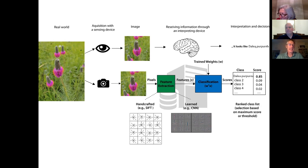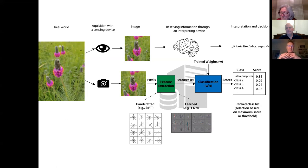Once you've taken the photo, the model does its best to determine what the species is. The model takes as input all the pixels from the photograph, and on the output side produces a classification — a list of species it knows about and the confidence in how well the photo matches each species, ordered from most likely to least likely.